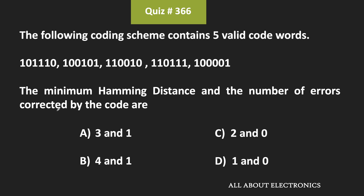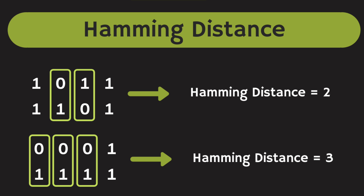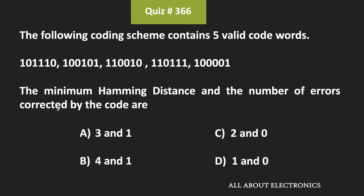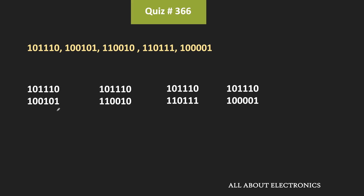Welcome to the YouTube channel All About Electronics. In this question, we've been given that for a particular coding scheme there are five valid code words. We've been asked to find the minimum Hamming distance and the number of errors this code can correct. To find that, first let us find the Hamming distance between all given codes. The Hamming distance is the number of bit positions at which two codes differ. There are 10 different comparison possibilities.